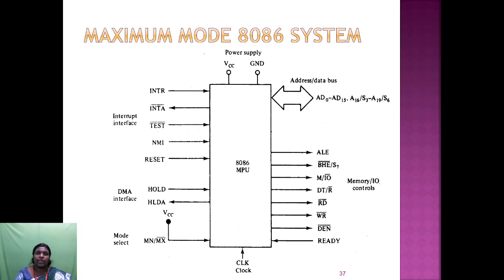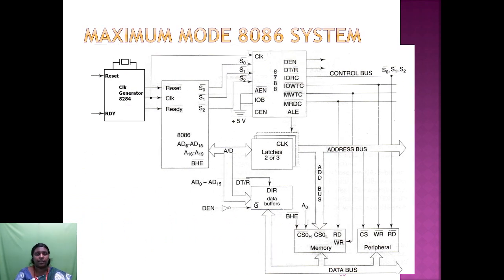In the maximum mode 8086 system, you connect a coprocessor such as the 8087 or another processor to the 8086. When you want to access the coprocessor, you select maximum mode. The interrupt interface, memory interface, and mode selection are similar to minimum mode. The control bus signals include data enable, data transmit/receive, read, write, memory write/read, address latch enable, and BHE. Addresses go to latches, and data goes through buffers connected to memory. The status pins determine the maximum mode of operation.